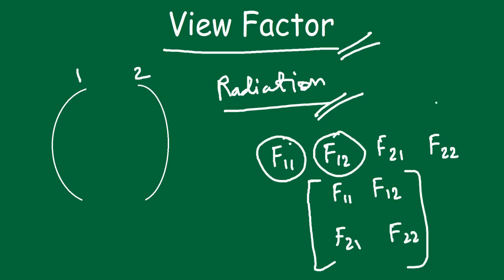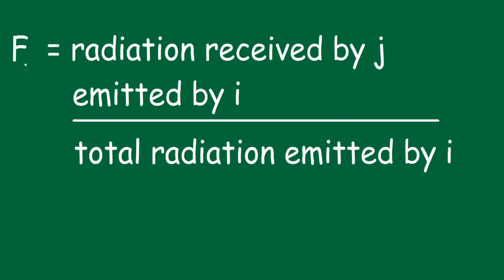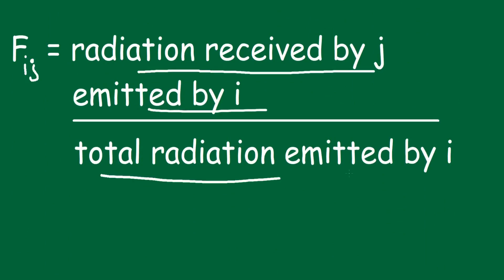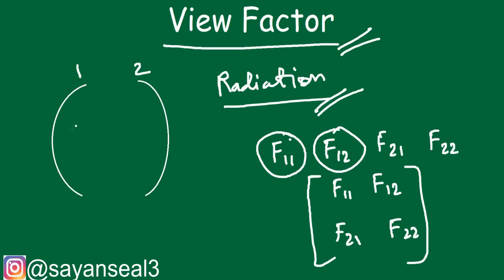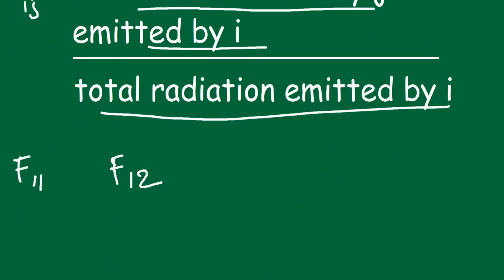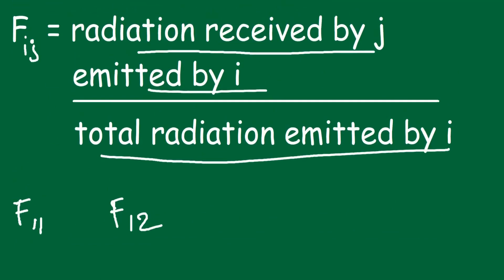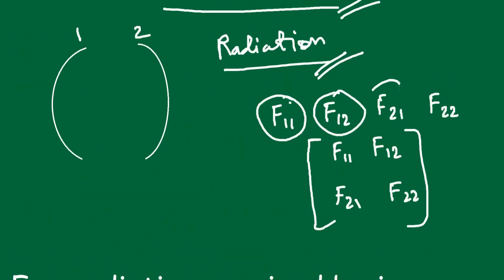To understand each of these terms, let's look at their definitions. F11 indicates the radiation received by surface 1 that was emitted by surface 1, divided by the total radiation emitted by surface 1. F12 is the radiation received by surface 2 that was emitted by surface 1, divided by the total radiation emitted by surface 1. Similarly, you can find the meaning of all four view factors.